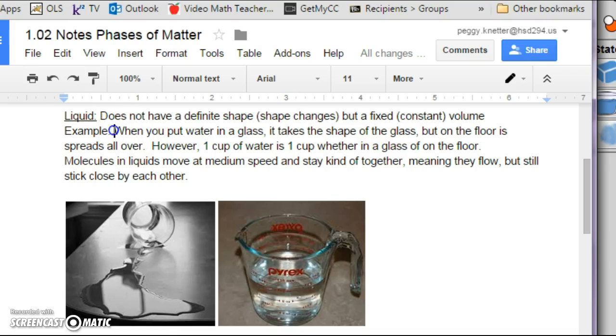So here's our example. When you put water in a glass, it takes the shape of the glass, but on the floor, it spreads all over. However, one cup of water is one cup, whether it's in a glass or on the floor. A gallon of water is one gallon, whether it's in the gallon jug or on the floor. Molecules in liquids move at medium speeds and stay kinda together, meaning they flow, but they stick close together.